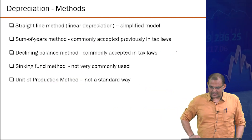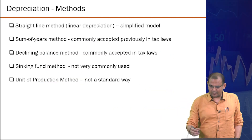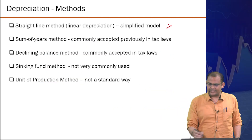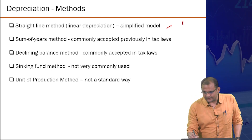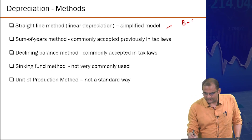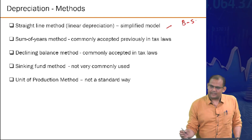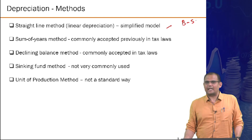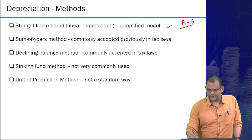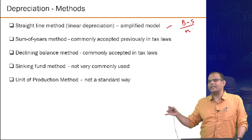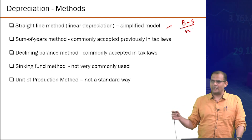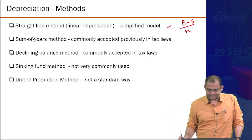The first method reviewed is the linear model, where the unadjusted basis minus salvage value is distributed equally, producing a linear trend.